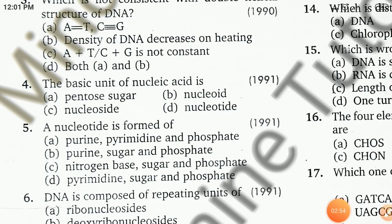The fourth question: the basic unit of nucleic acid is — pentose sugar, nucleoside, nucleoid, or nucleotide. We should know that nucleic acids, both DNA and RNA, are linear polymers of nucleotides. So nucleotides are the monomer base units; nucleic acids are polynucleotides.